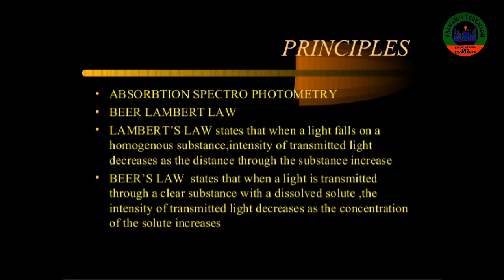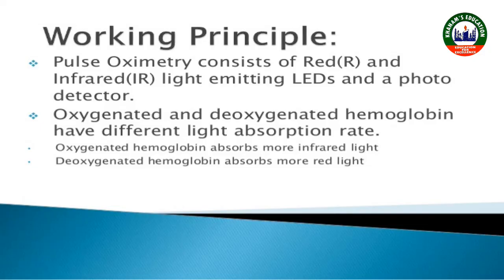The pulse oximeter probe emits two lights of different wavelengths. There are two lights in the pulse oximeter probe. The red light has a different wavelength and the infrared light has a different wavelength. Oxyhemoglobin absorbs more infrared light.